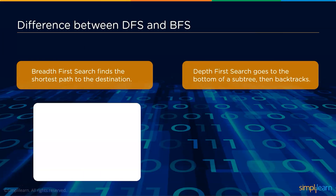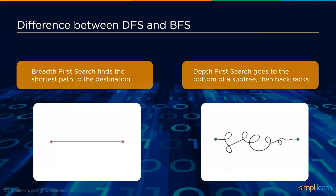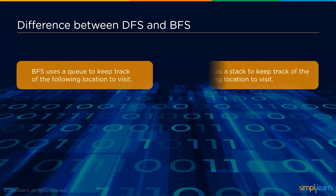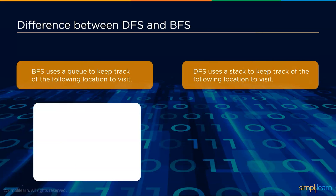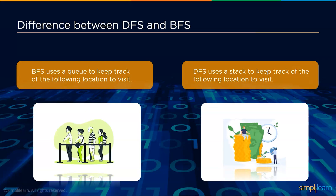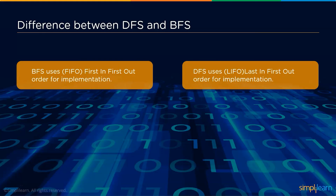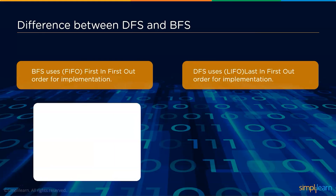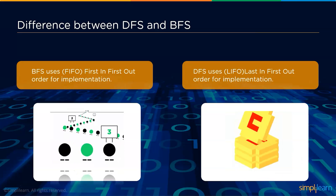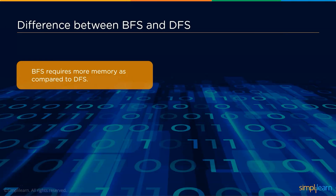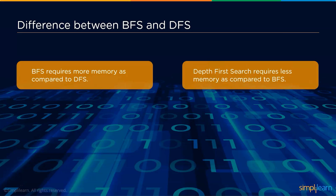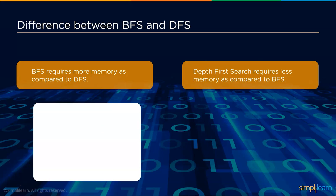Now let's look at fundamental differences between BFS and DFS. BFS finds the shortest path to the destination, whereas DFS goes to the bottom of a subtree and then backtracks. BFS uses a queue to track the next locations to visit, while DFS uses a stack. BFS uses FIFO (first-in, first-out) order because it uses a queue, whereas DFS uses LIFO (last-in, first-out) because it uses a stack. BFS requires more memory compared to DFS.